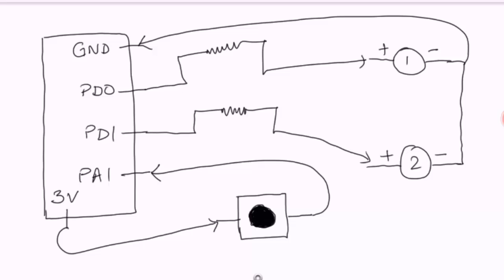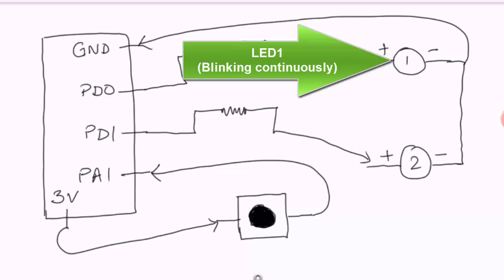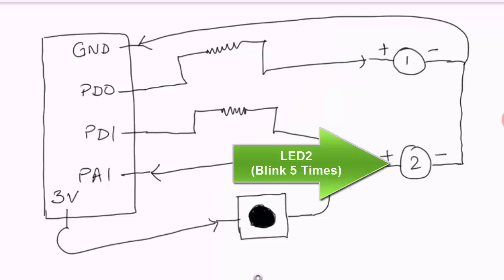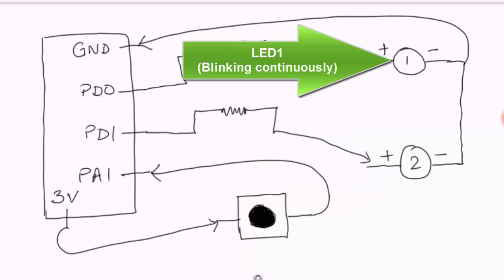We will write the program so that the first LED blinks continuously. When we press the switch, an interrupt occurs — the first LED stops blinking, the second LED starts blinking for 5 times, and then the first LED resumes blinking forever until the switch is pressed again.